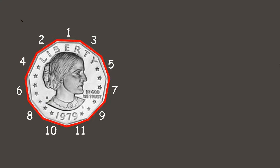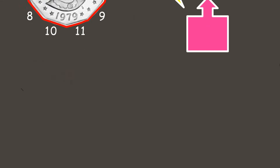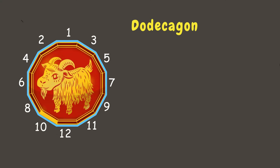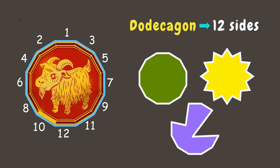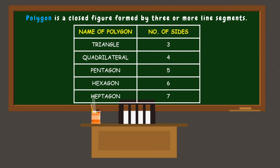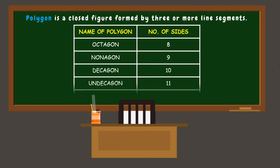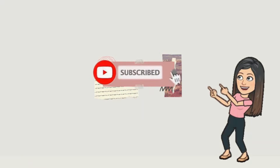A polygon with eleven sides and eleven angles is called an undecagon. Here are other examples of undecagon. A polygon with twelve sides is called a dodecagon. A dodecagon has twelve sides and twelve angles. Here are other examples of dodecagon. Wonderful job students, you've made it this far. Here are the things that you learned today.